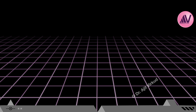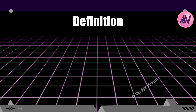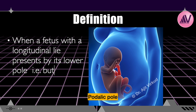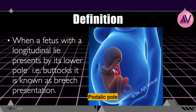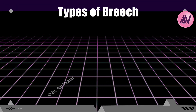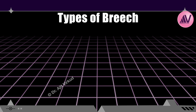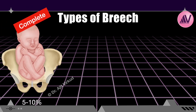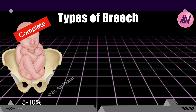When a fetus with a longitudinal lie presents by its lower or podalic pole — that is buttocks and/or feet — it is known as breech presentation. Breech presentations are categorized into various types. When the presenting parts include the buttocks, genital organs, and both feet, it is referred to as complete breech presentation, seen in 5–10% of cases.